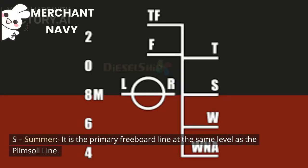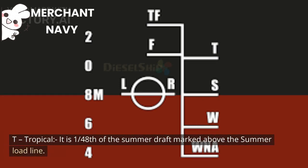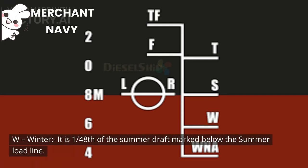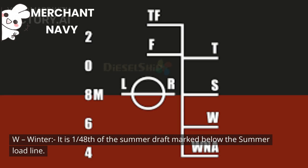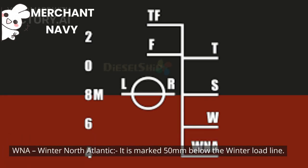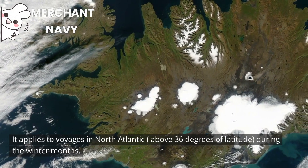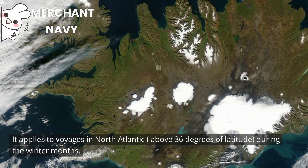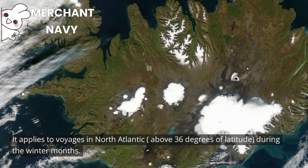The standard load line types are as follows. S — Summer: the primary freeboard line at the same level as the Plimsoll line. T — Tropical: 1/48th of the summer draft marked above the summer load line. W — Winter: 1/48th of the summer draft marked below the summer load line. WNA — Winter North Atlantic: marked 50 mm below the winter load line, applying to voyages in the North Atlantic above 36 degrees of latitude during the winter months.